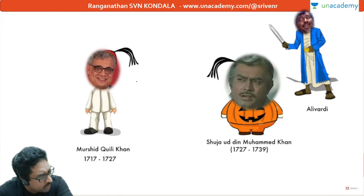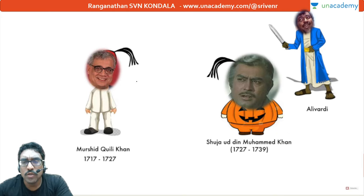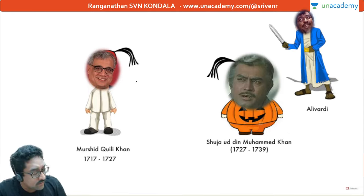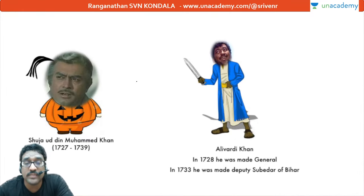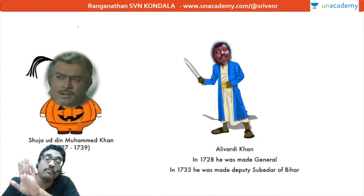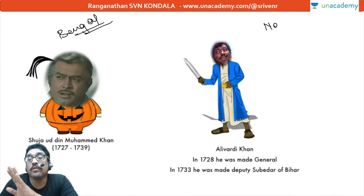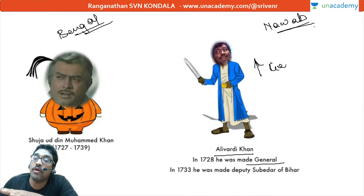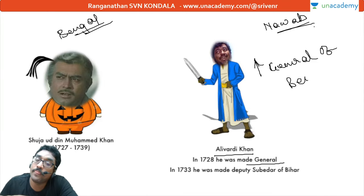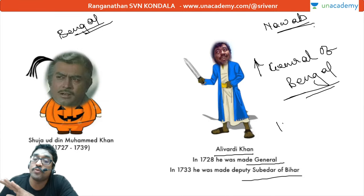Murshid Quli Khan had a son, Shujauddin Muhammad Khan. Shujauddin's deputy or assistant was Alivardi Khan. From 1727 to 1739, Murshid Quli Khan's descendant Shujauddin was ruling Bengal. The Bengal Nawabs had greater authority now. And Alivardi Khan in 1728 was made the general - he got promotion as general of Bengal.